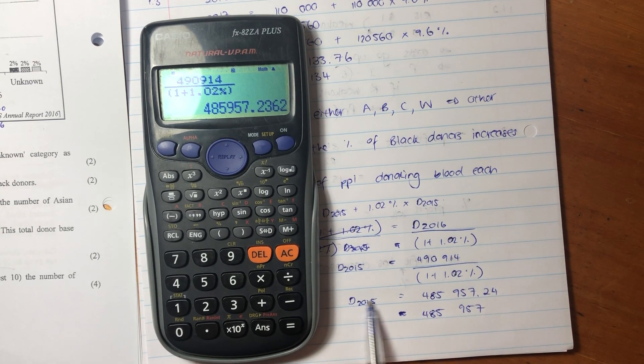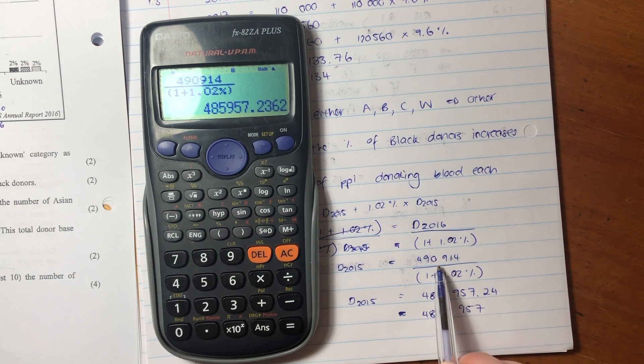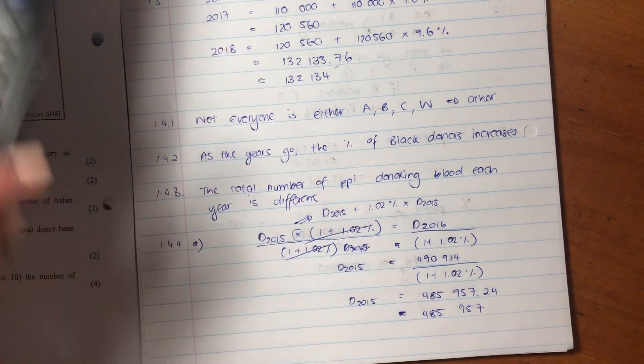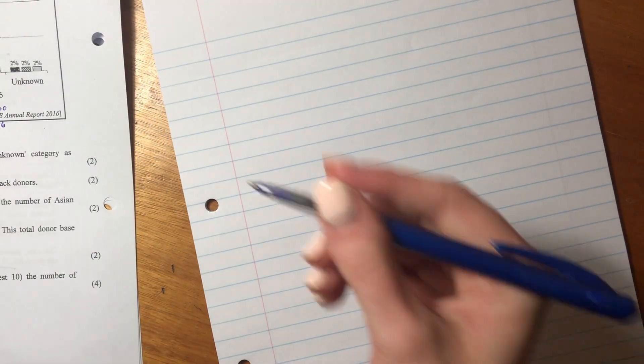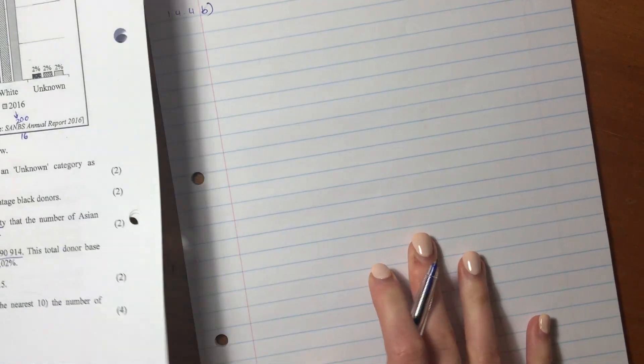Let's just do a little bit of a test. Is this amount for the donors in 2015, is it less than the number in 2016? Yes it is. Therefore it makes sense. Because that's what they told us. Let's now move on to the last question of this video.